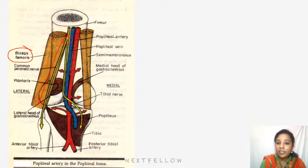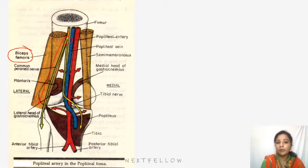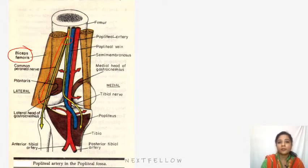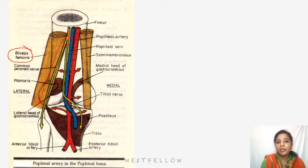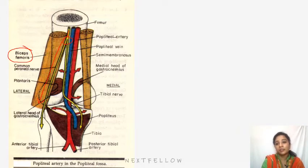It curves laterally around the neck of the fibula, lying deep to the peroneus longus (fibularis longus) muscle, where it finally divides into superficial and deep peroneal nerves — otherwise called the superficial and deep fibular nerves. Before dividing, the common peroneal nerve gives rise to articular branches to the knee joint and to the superior tibiofibular joint, and partly supplies the lateral skin.